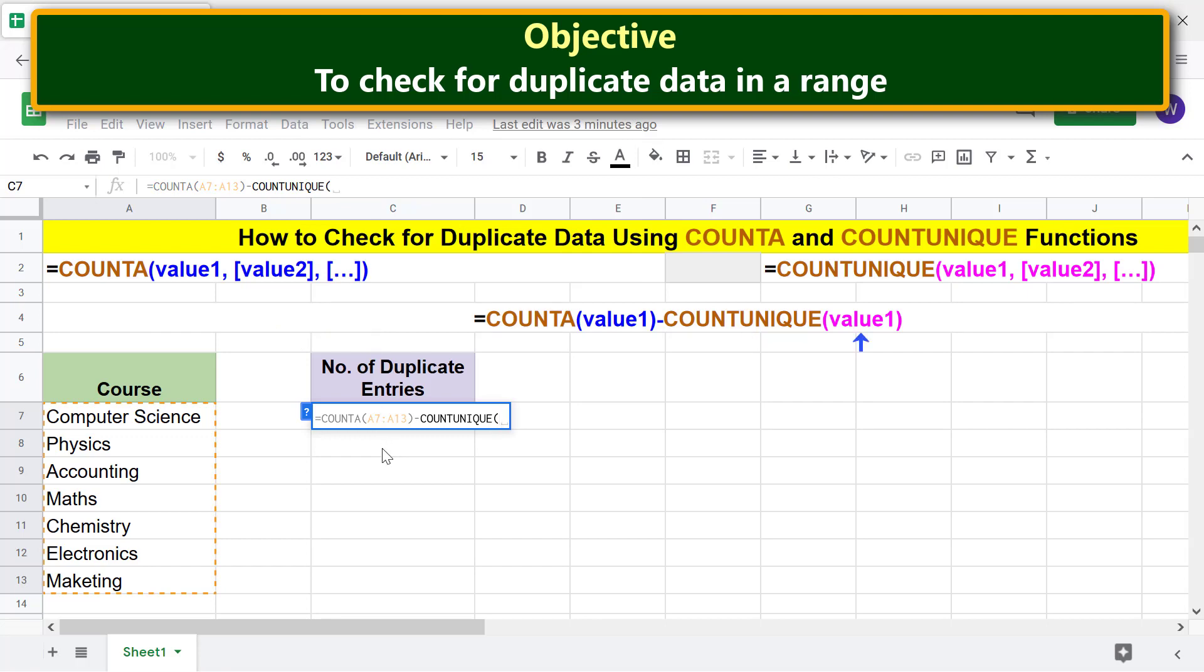For value1, select this range. Type the closing parenthesis, press Enter. The difference between the values returned by COUNTA and COUNTUNIQUE is zero. It means there are no duplicate values in the range.